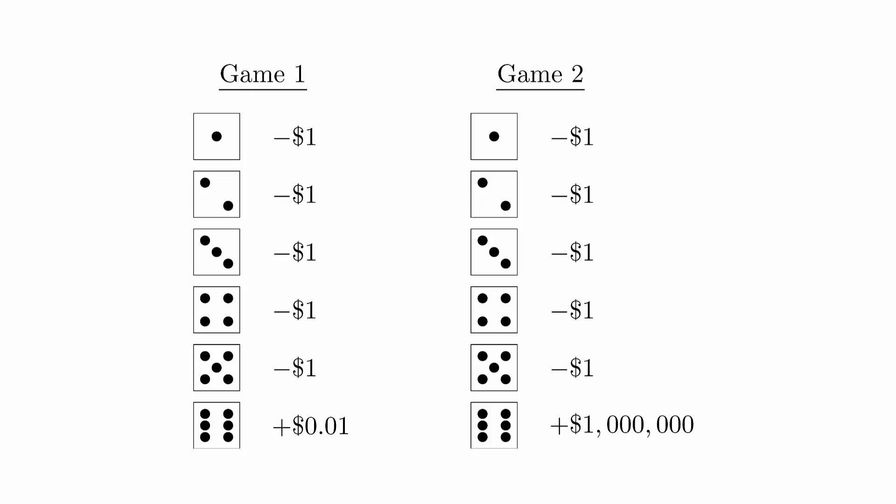The chances of winning and losing are the same for each game, but you should be able to see that the first game is bad for you and the second game is good for you. You are intuitively picking up on the idea of the expected value of a game. There's more going on with this game than just the probability of winning and losing. Some wins are bigger than others.